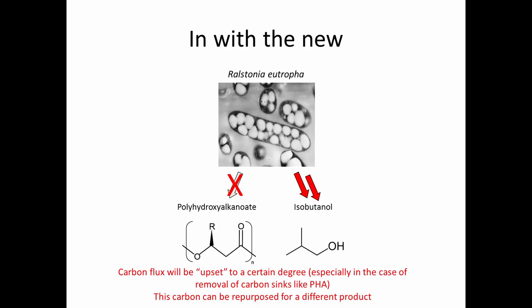And then in with the new. Once we've blocked that pathway, the carbon flux will be upset — carbon which is used to going into polyhydroxyalkanoate will have to go somewhere. The cell will react in interesting ways and try to tell us something: it's got carbon it doesn't know what to do with. It might end up secreting a lot of carbon compounds that end up being useful. That is especially true if we remove a carbon sink like PHA, which cells typically make in large amounts as a carbon storage mechanism. They can't do that anymore, so carbon has to go somewhere — potentially it just flows out of the cell. We can take advantage of that, reclaim it, and repurpose that carbon for a different product.